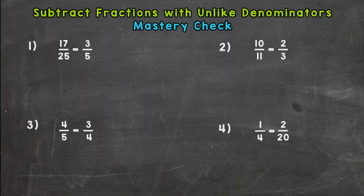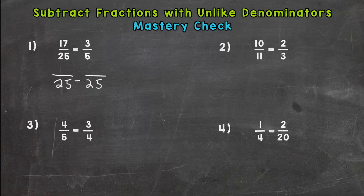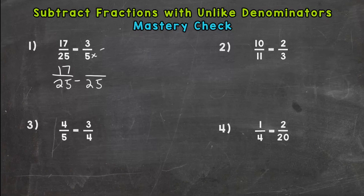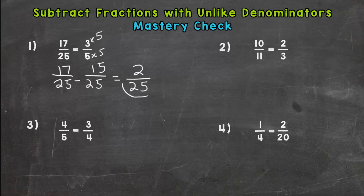All right, welcome back. Let's check your work. For number one, our common denominator is 25. The first fraction already has that common denominator so we keep it. The second one we do need to rename. Five times five is 25, so we need to do that to the top to get an equivalent fraction. Three times five is 15. We subtract and get 2/25. That cannot be simplified. Common factor of one between 2 and 25, so we are done.